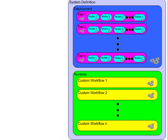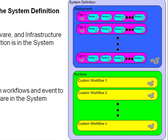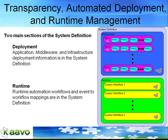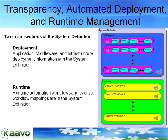The system definition file has two main sections: deployment and runtime. The deployment section contains information about tiers in the system — we can define one or n tiers, and in each tier we can have one or n resources. Each resource can have post-startup or pre-shutdown actions or workflows. We can define the order in which tiers are configured and displayed, and group resources within a tier, as well as define workflows at the tier level and at the system level.